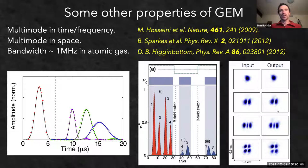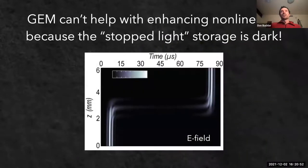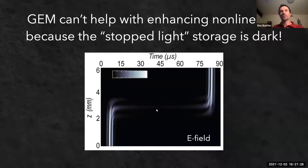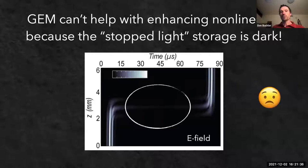Now we'll use these memory properties to increase non-linear interactions. The memory as described can't directly help with non-linearities because once light is stored - mapped into ground-state coherence with the control beam off - there's no optical field present at all, it's completely dark. We can't do cross-phase modulation if there are no photons, so we need some way of having a bright field inside the system.